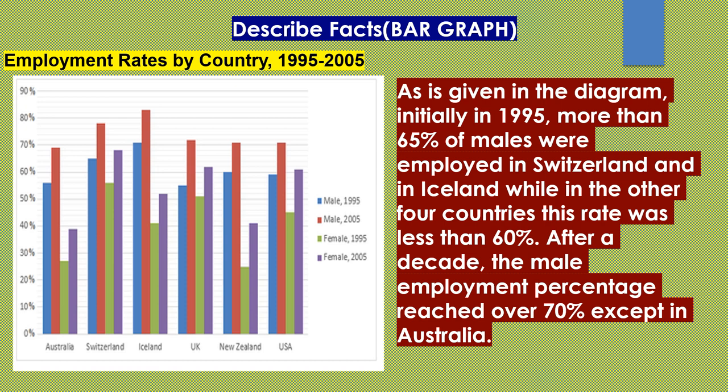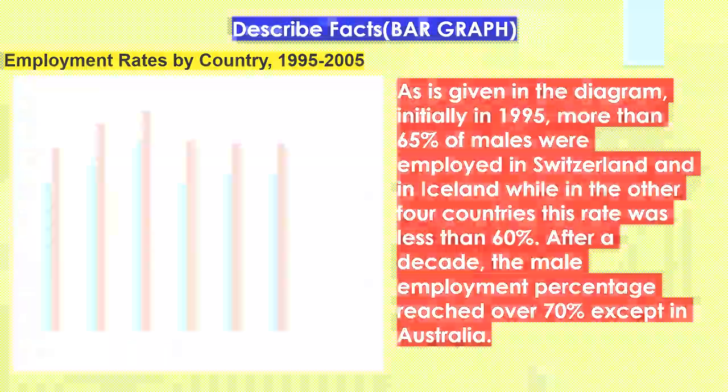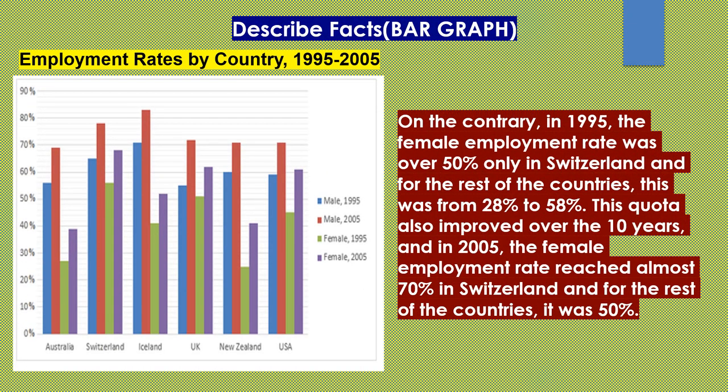After a decade, the male employment percentage reached over 70 percent except in Australia. On the contrary, in 1995, the female employment rate was over 50 percent only in Switzerland, while for the rest of the countries it was below that. This figure also improved over the 10 years, and in 2005, the female employment rate reached almost 70 percent in Switzerland, while for the rest of the countries it was around 50 percent.